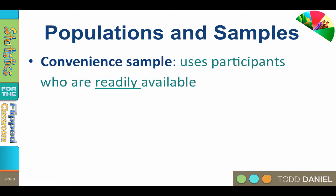Even if we were studying college students at our university, a truly random sample would have to include all college students across the country. So many times we are left studying the people whom we have available — they become our participants because they are convenient, and we call this a convenience sample. The convenience sample uses participants who are readily available.